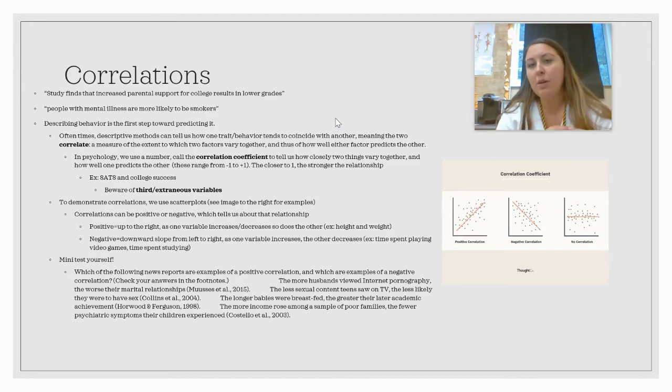To demonstrate correlations, we use scatter plots like you see here. This is what a positive correlation looks like—it goes up, or it can also both go down, which is the same thing. A negative correlation goes like this, because as one variable is high, the other is low in values. Then there can be no correlation where it looks pretty random in the data. We'll do this together in class, actually, so just skip that for now.